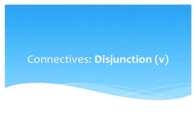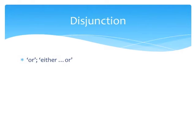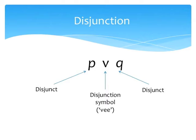Now we'll deal with another connective: disjunction, or V. This corresponds, again, more or less, to the English OR, or either-OR, at least in some of its uses. Just like the ampersand, the V takes two sentences to make a more complex one. Each of the component sentences is called a disjunct.